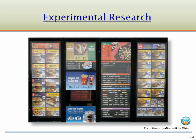Experimental research is a type of quantitative research that systematically manipulates one or more variables to determine which variables have a causal effect on another variable. For example, two groups of subjects taste cookies — one with a national brand and the other with a store brand. Each group rates the cookie on a seven-point scale from poor to great taste. The group with the branded name tends to rate the cookie as better tasting, demonstrating the power of a brand name.